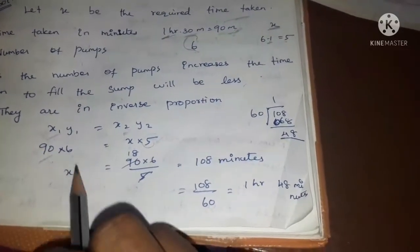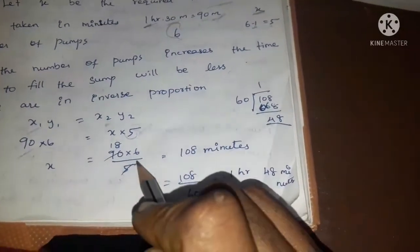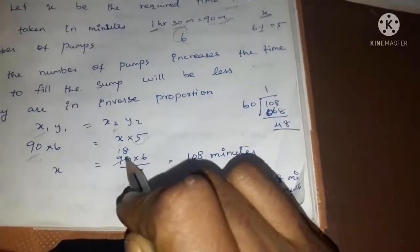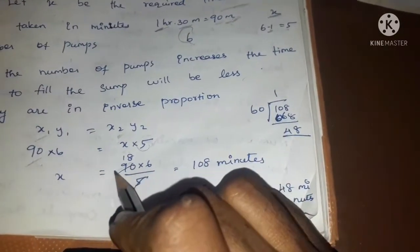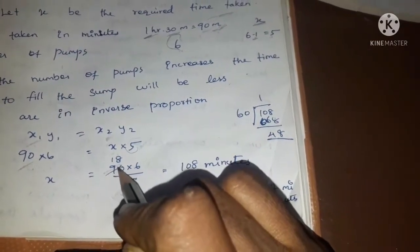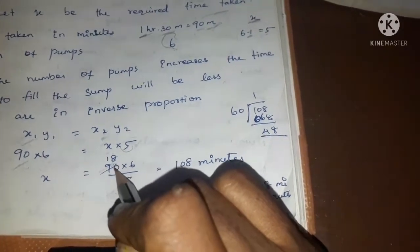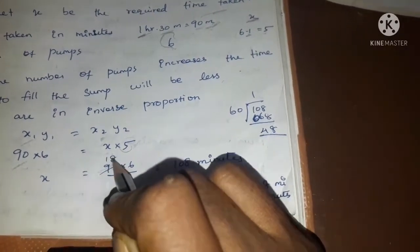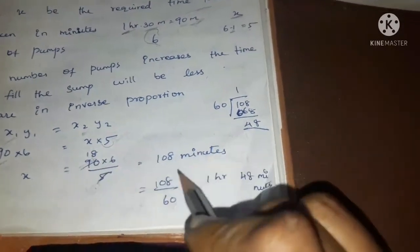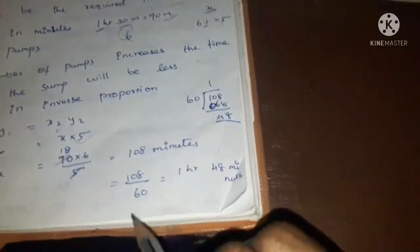So x equals 90 into 6 by 5. Simplifying: 9 into 12 equals 108. So the answer is 108 minutes.